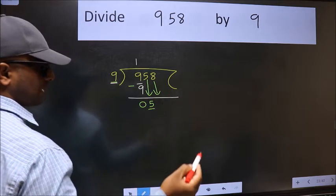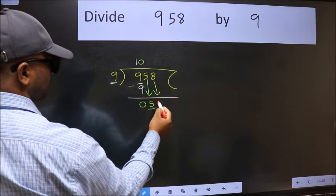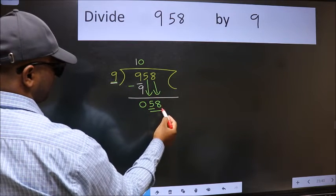And the rule to bring down the second number is we should put 0 here. Then only we can bring this number down. Now 58.